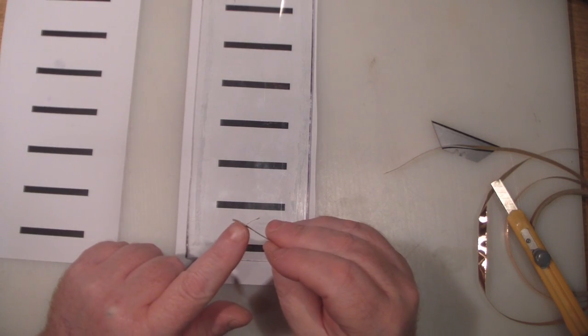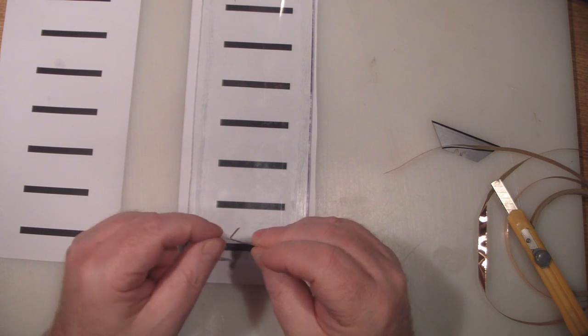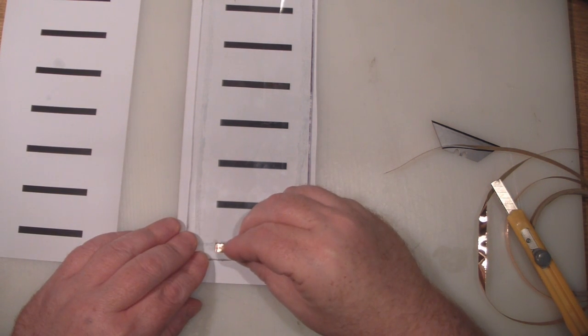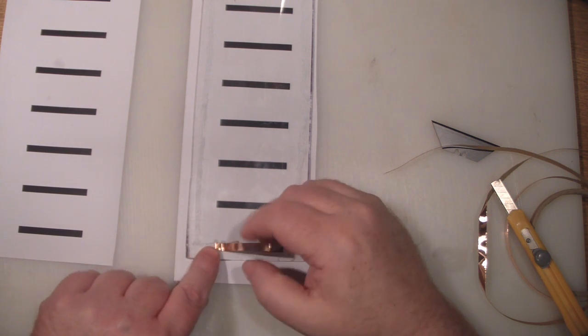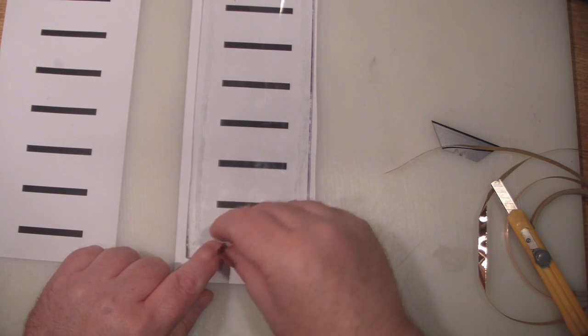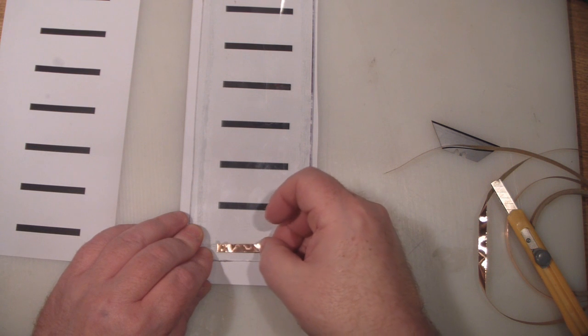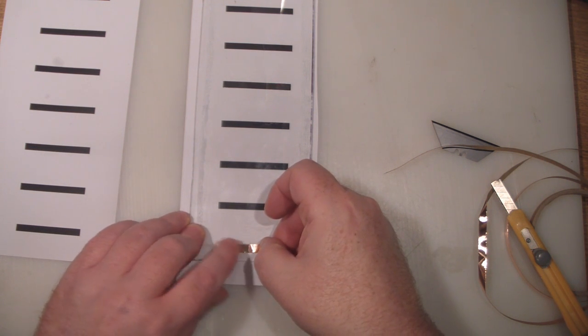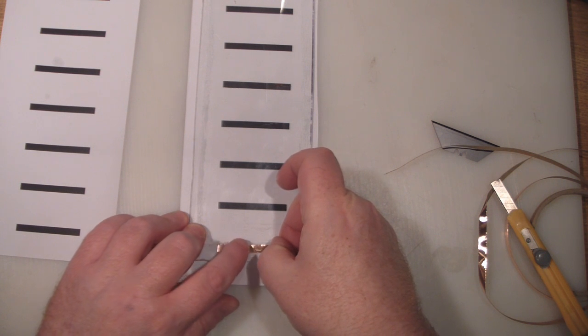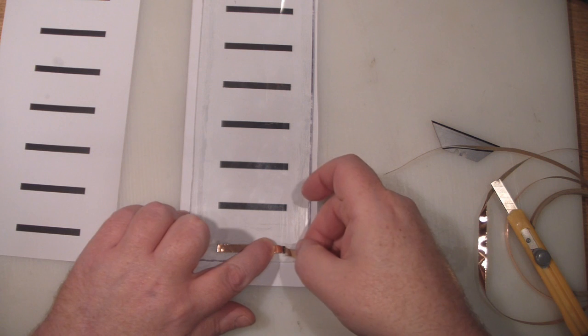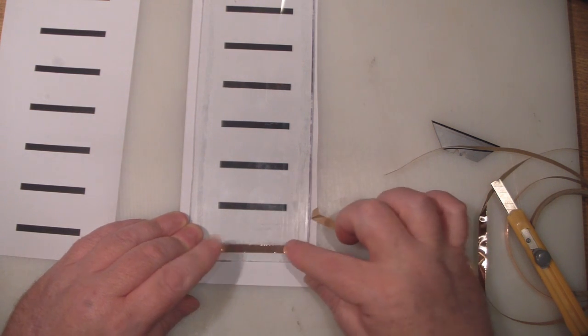So you want to get your element and just peel back a small amount of the actual cardboard that's protecting the sticky back on this. Don't peel it all off just yet. And then carefully line it up on the plexiglass and just stick that end like so. Peel back some more and then flatten it out.